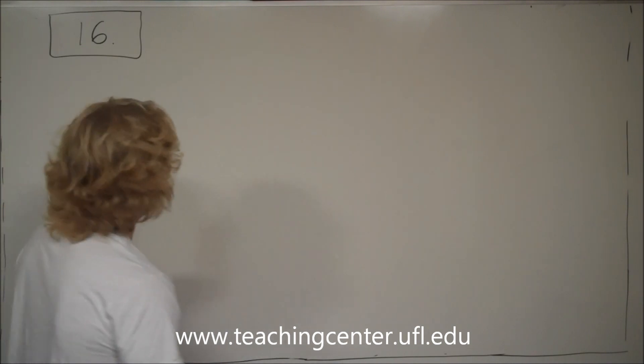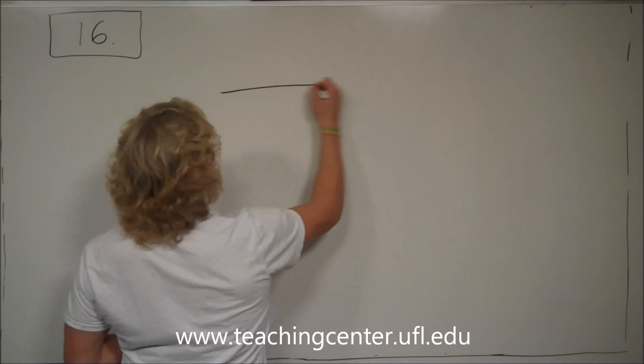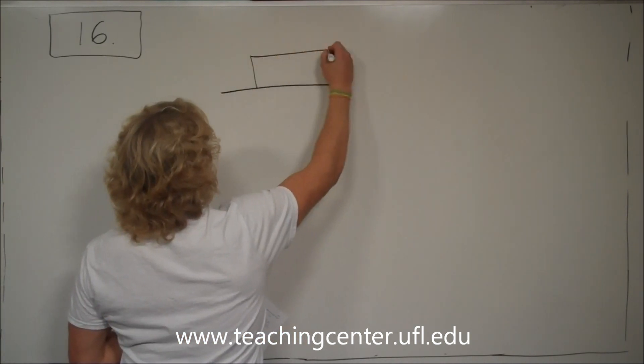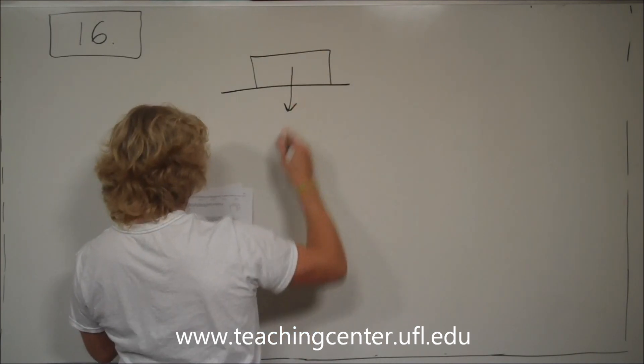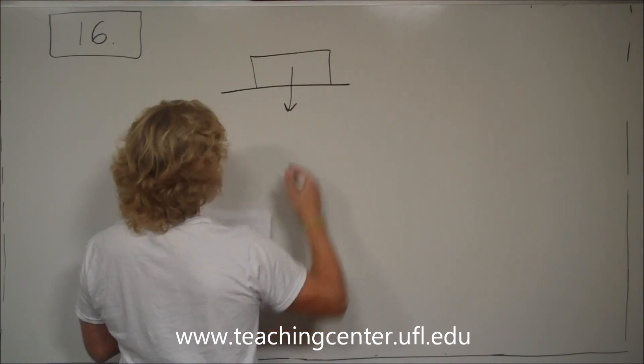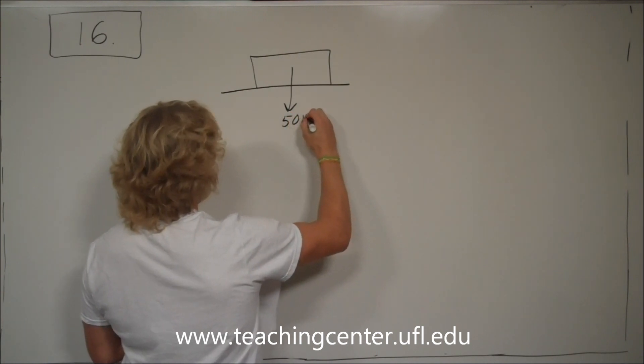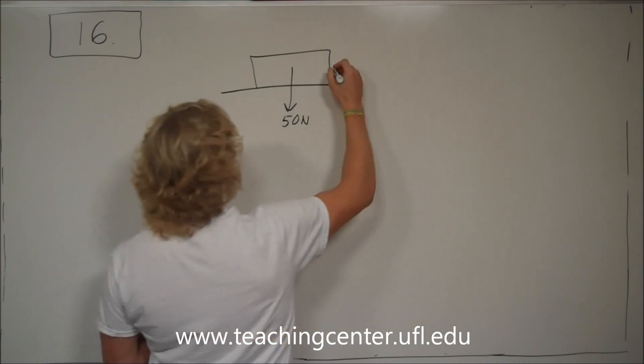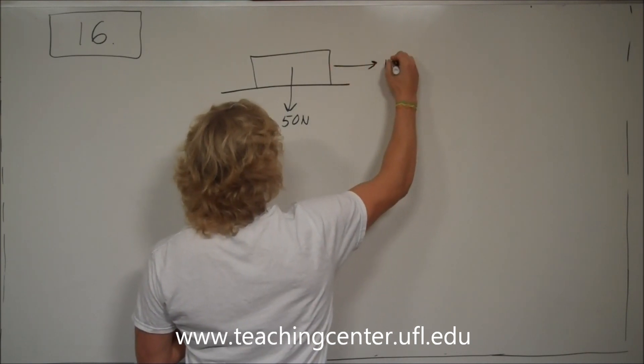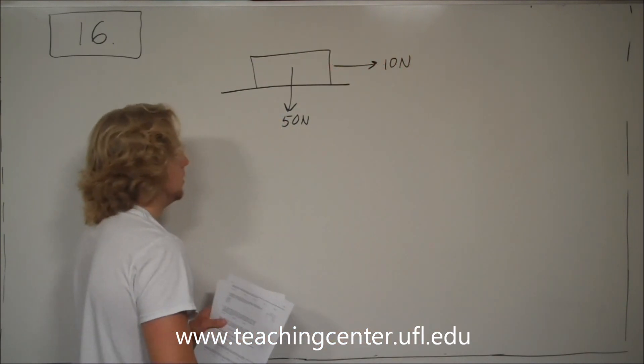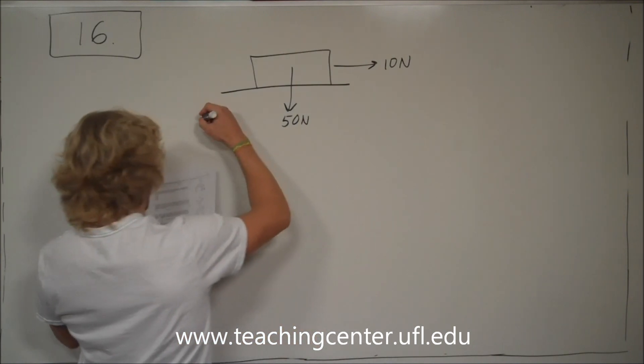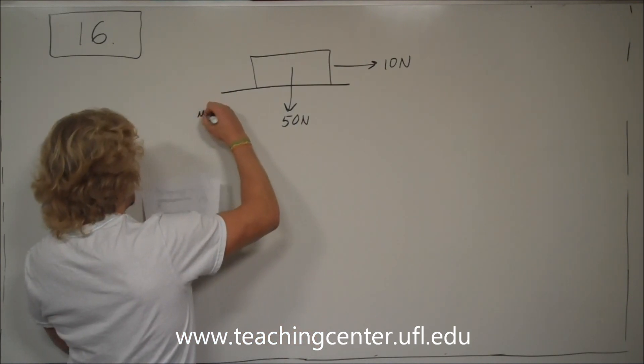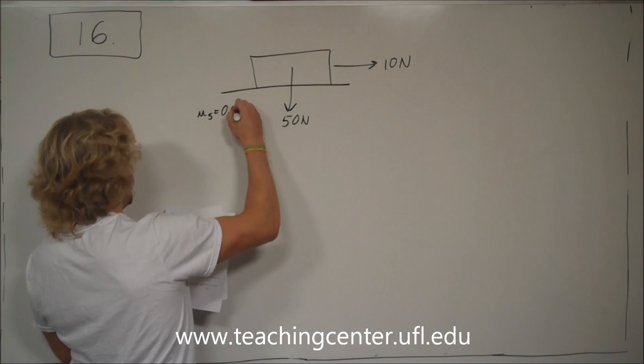Let's draw this scenario out. We have a box, and it weighs 50 newtons. 50 newtons is equal to the force of gravity on it. You have somebody pulling 10 newtons, but it does not move. The coefficient of static friction is equal to 0.4.